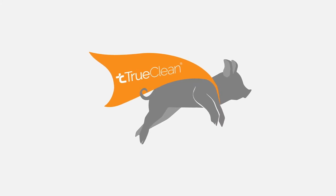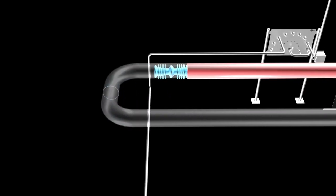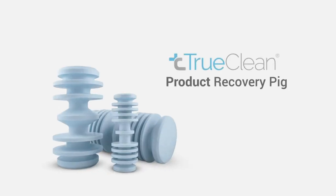This silicone projectile pig can fly, and it can fly down your processing pipe, making it ideal for product recovery. Let's show you how the TruClean Product Recovery Pig works.